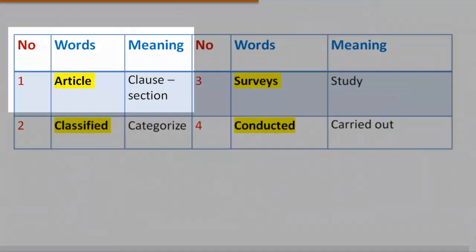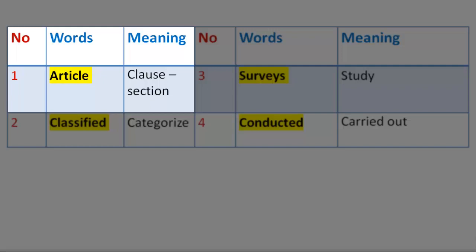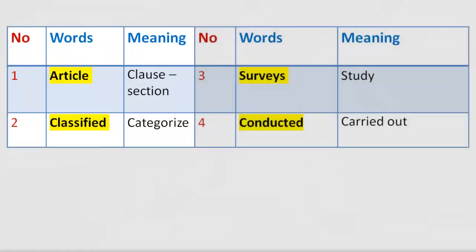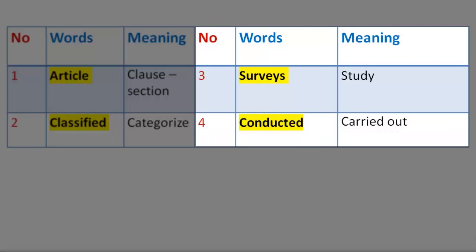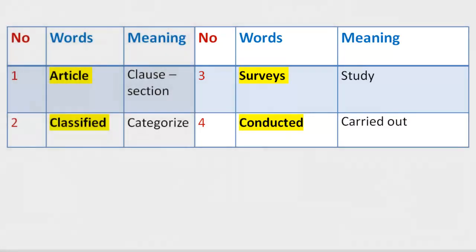Vocabulary 3. Number 1. Word: Article. Meaning: Clause, section. Number 2. Word: Classified. Meaning: Categorize. Number 3. Word: Surveys. Meaning: Study. Number 4. Word: Conducted. Meaning: Carried out.